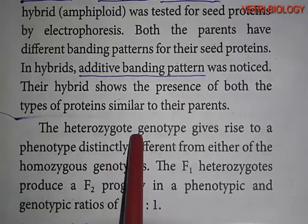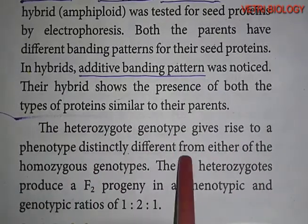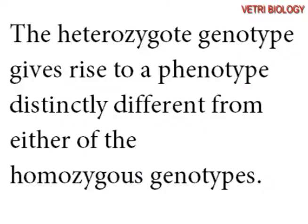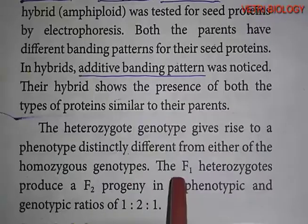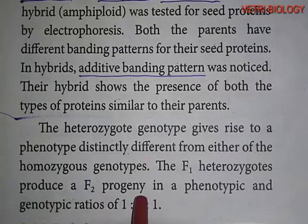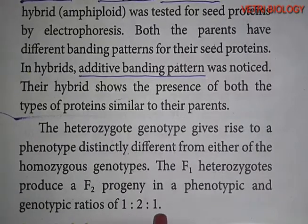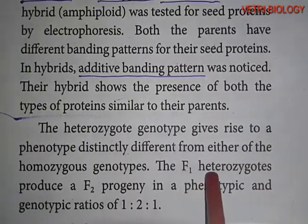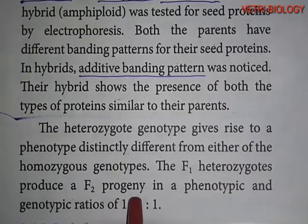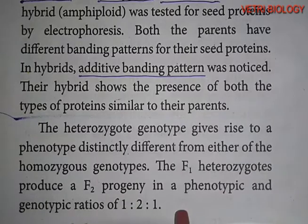The heterozygous genotype gives rise to a phenotype distinctly different from either of the homozygous genotypes — this is the additive phenotype. The F1 heterozygote, when self-crossed, produces F2 progeny in phenotypic and genotypic ratios of 1:2:1. In the F2 progeny, the parent characters are expressed separately. This is called co-dominance.